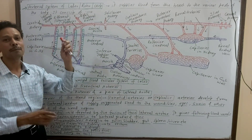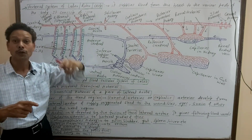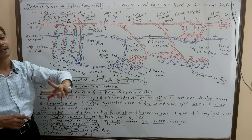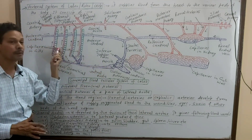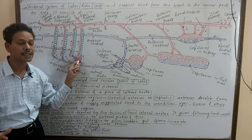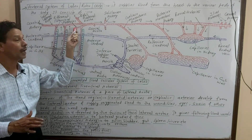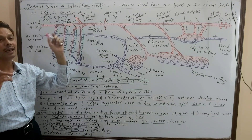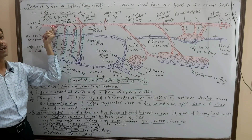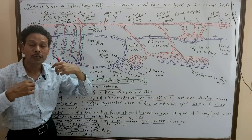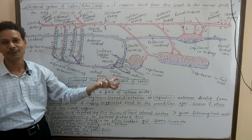The afferent branchial arteries carry deoxygenated blood through the gills where it gets oxygenated. After oxygenation, the efferent branchial arteries collect the oxygenated blood. These efferent branchial arteries unite and produce a pair of lateral aortas on the dorsal side. From the lateral aortas, blood is supplied to the anterior head region via carotid arteries.